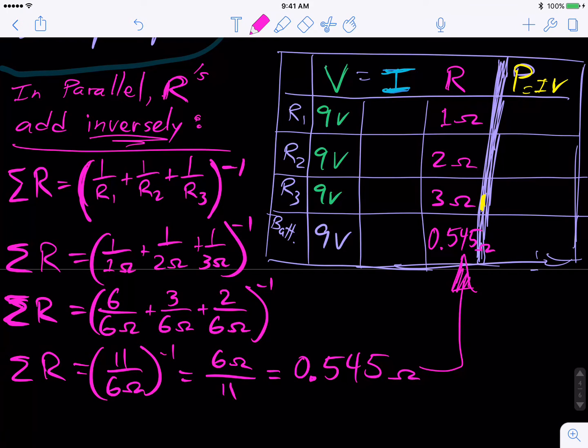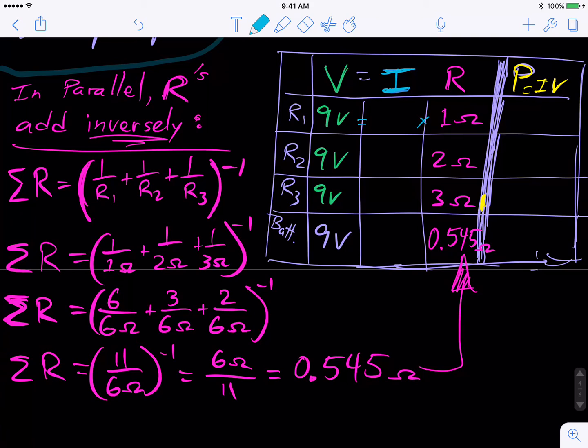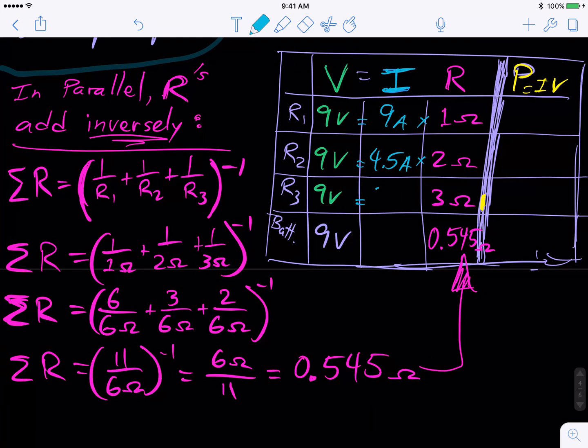Now that we've unlocked, we've really unlocked two in every row. So now we can use VIR to calculate all of the currents. Really, you'd have nine volts equals I1 times one ohm of resistance. So you would divide. Nine volts divided by one ohm gives you nine amps of current. That's a lot of current, but this is just an example that we made up to work this. And then nine divided by two is 4.5 amps. Nine divided by three is three amps. And then nine divided by 0.545 is 16.5 amps.